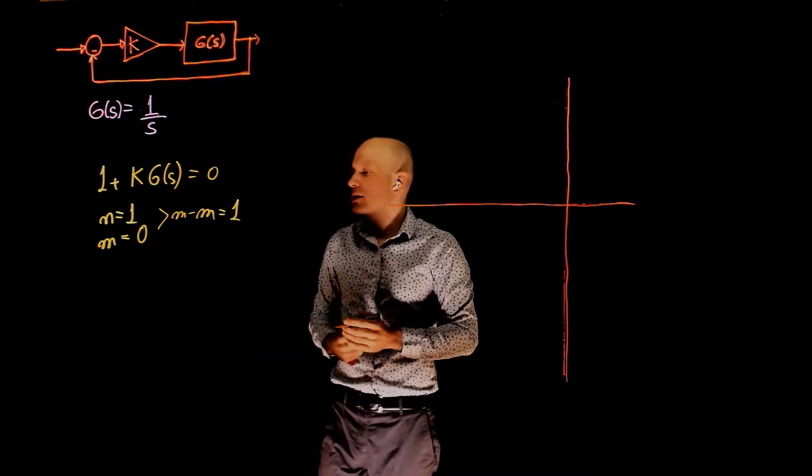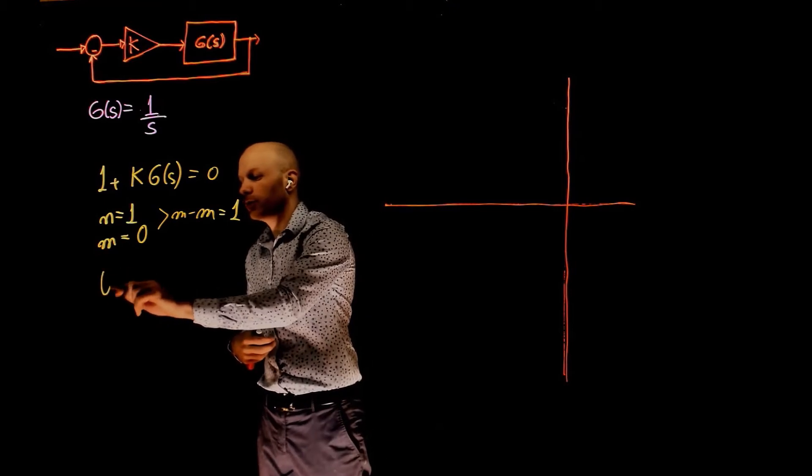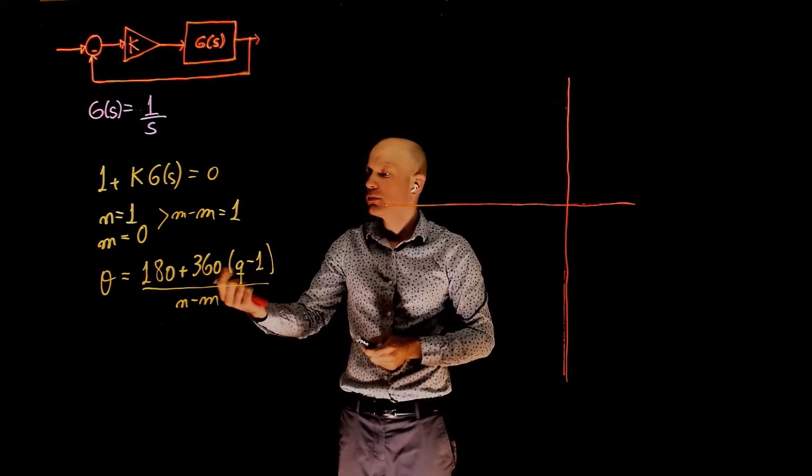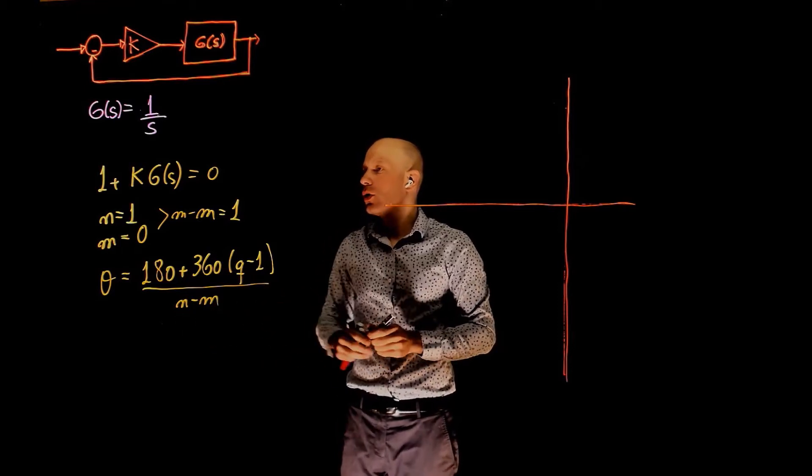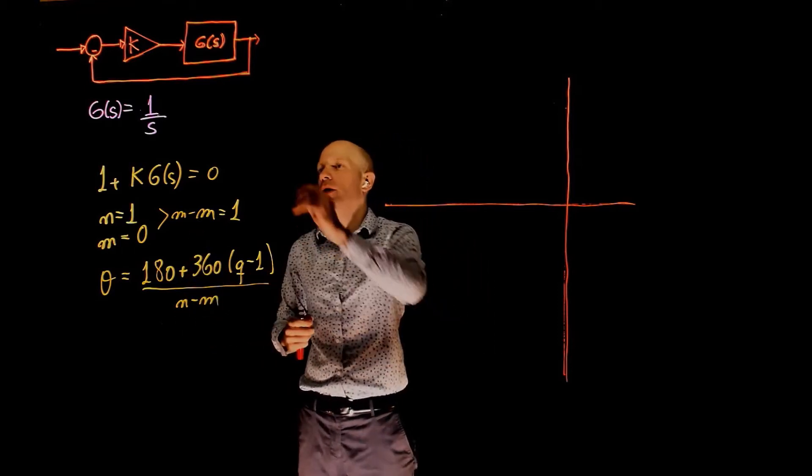We can determine the angle of that asymptote using the following formula: 180 plus 360 times q minus 1, divided by n minus m. q goes from 1 to n minus m.